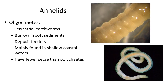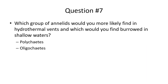Oligochaetes are generally terrestrial, so we'll mostly ignore them. Their setae are not as abundant or as obvious as those of polychaetes. Question: Which group of annelids would you more likely find in hydrothermal vents, and which would you find burrowed in shallow waters?